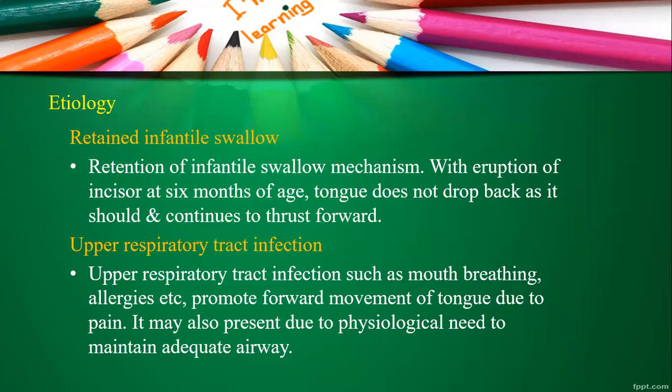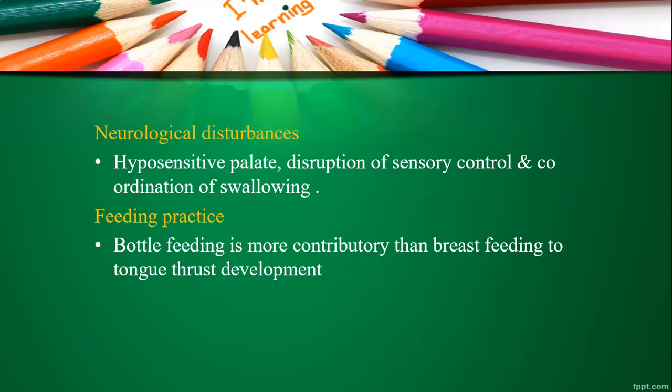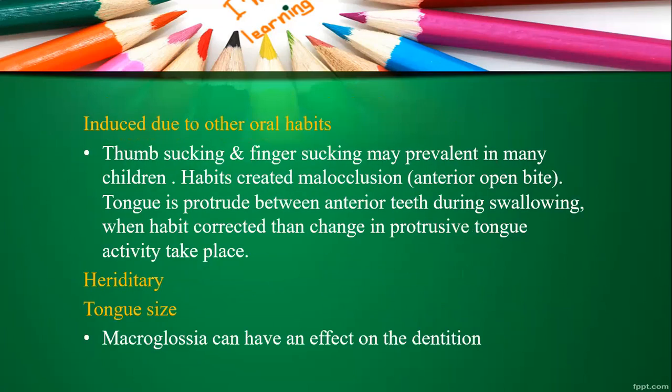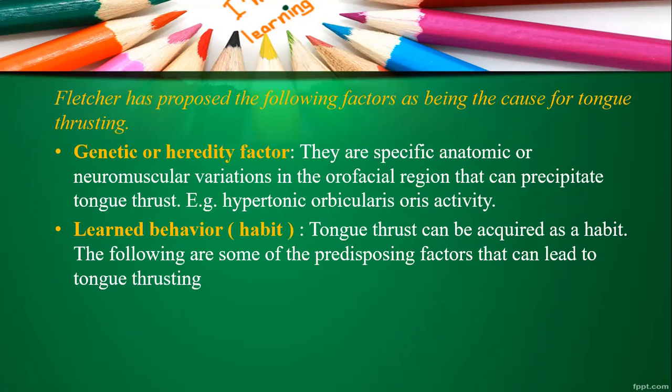There are many etiological factors which might lead to tongue thrust habit, such as retained infantile swallow, upper respiratory tract infections, neurological disturbances, certain feeding practices during infancy and childhood, connection to other oral habits, and genetic or hereditary factors. This etiology was basically proposed by Fletcher, who organized the causative factors under specific headings.